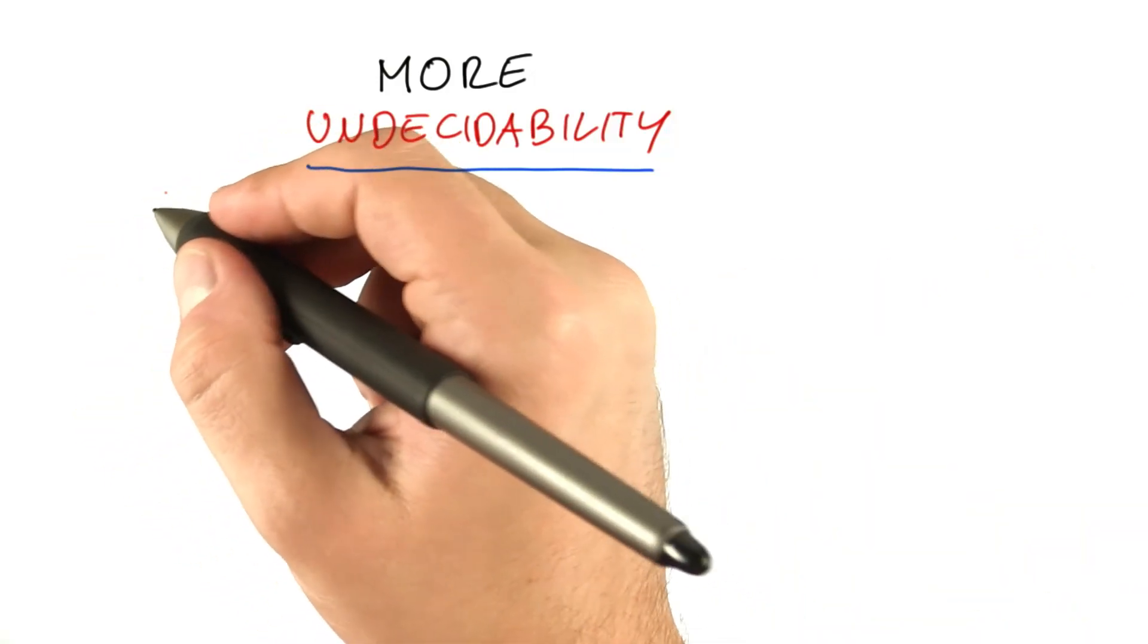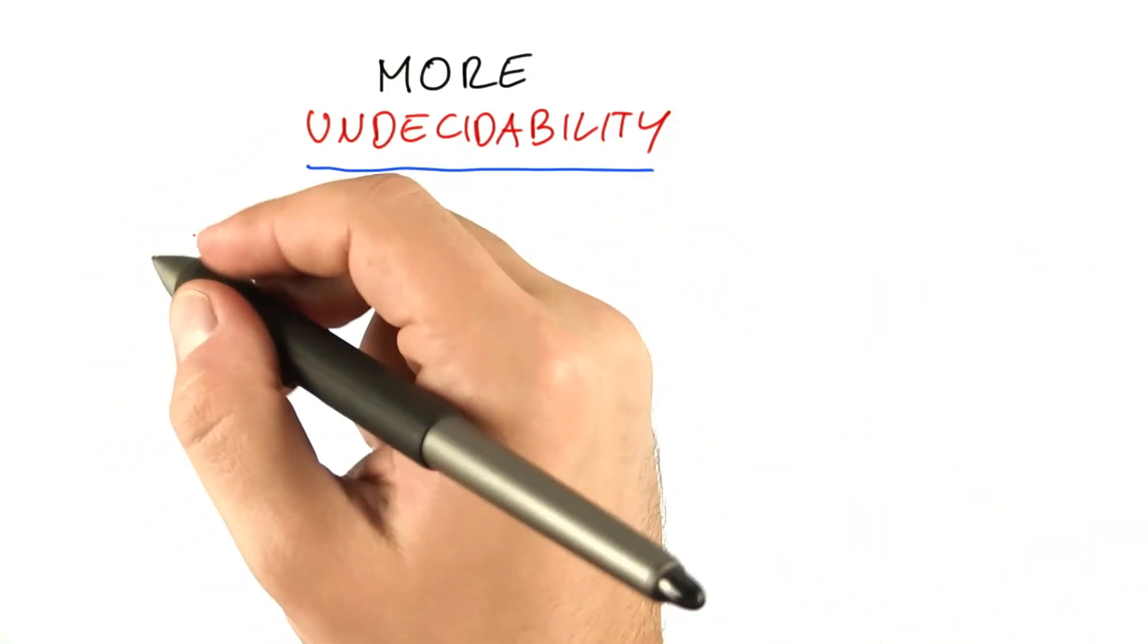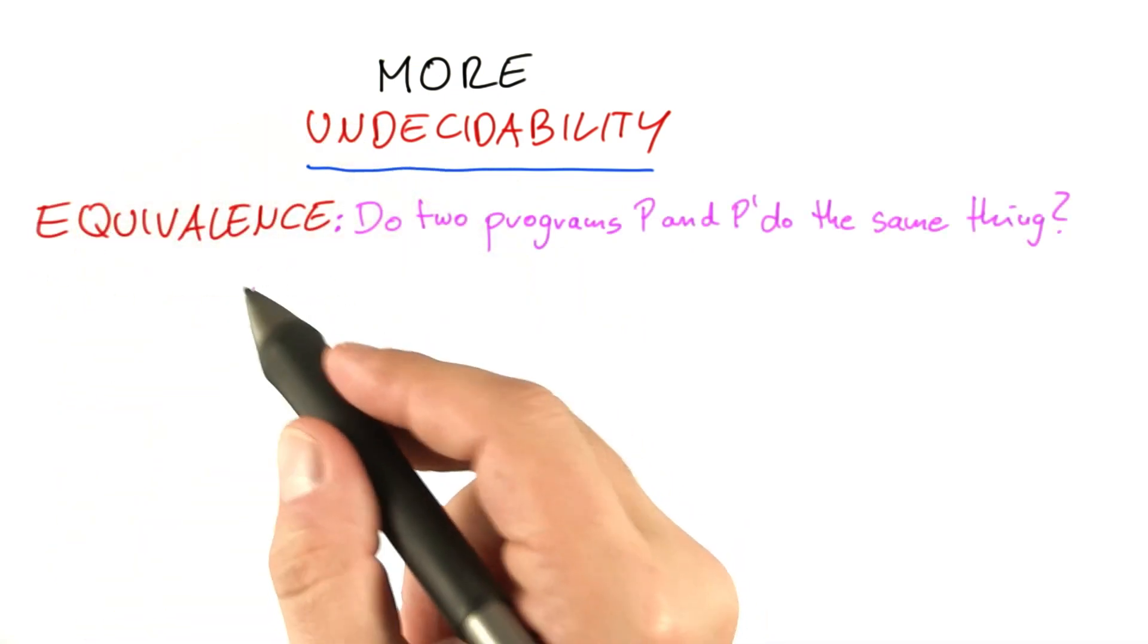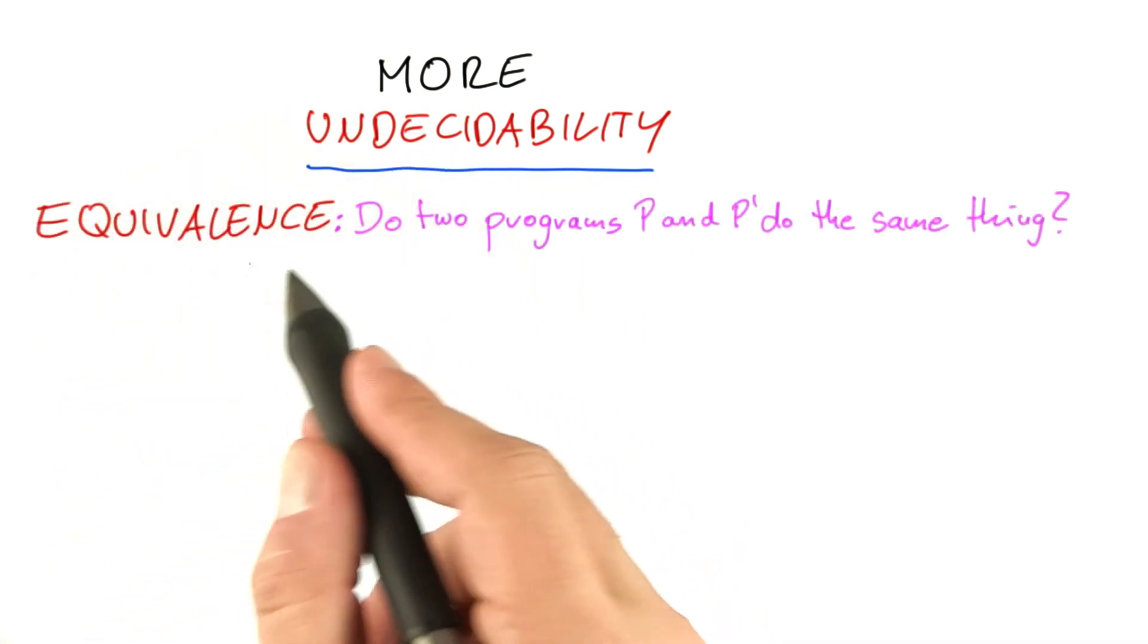Now I will give you another type of problem, and this time you can prove that this problem is undecidable. The problem is as follows, and it's one that sounds very simple. It's the equivalence problem.